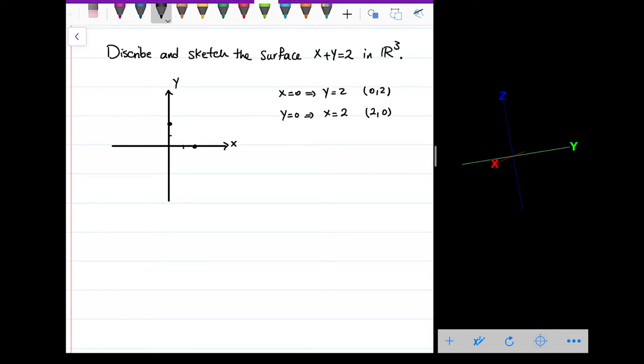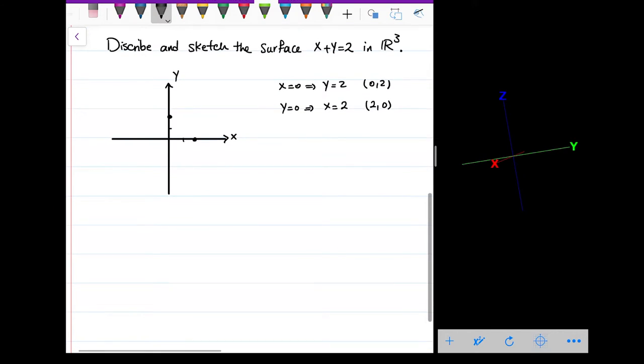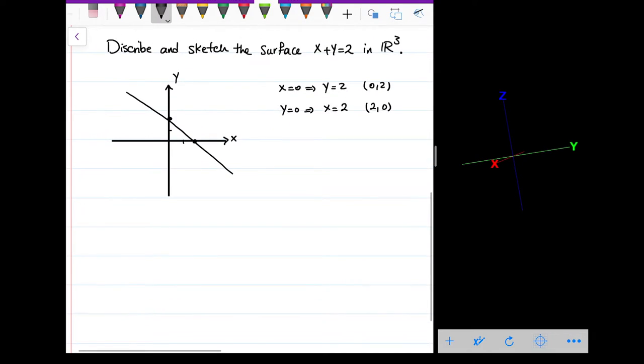So two points are enough to graph a line. So let me graph this line, something like this. So this is x plus y equals 2.